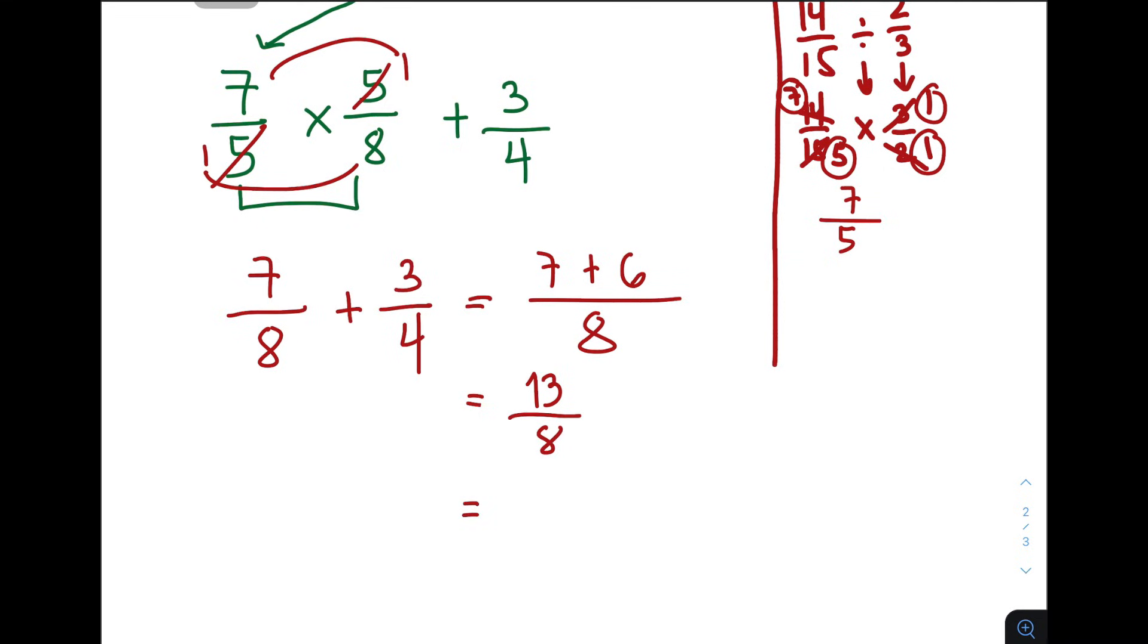And that would give you the answer of pwede siya maging 1 and 5 over 8. And this is the answer for item, for that problem, guys. So, I hope na yung confusion nyo sa order of operations and yung theory nyo about fraction ay naging clear.